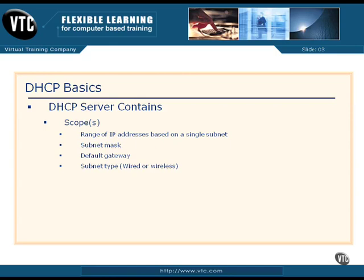Addresses are given out for different amounts of time depending on connection type. On a wired network the lease is around six or seven days, while on a wireless network it's about eight hours. The shorter wireless lease ensures that a computer drops off the network if it can't renew. Importantly, once you create a scope on the DHCP server, you must activate it before it will answer DHCP Discover packets. Deactivating the scope stops it from providing addresses.